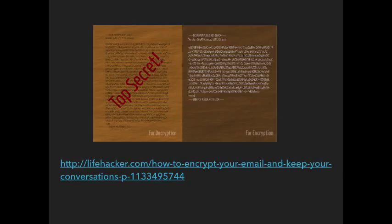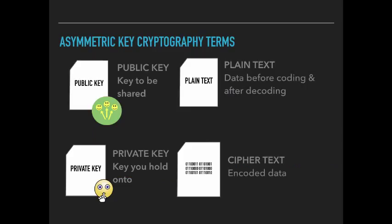If you'd like to make your own private key and public key, you can go to Lifehacker where it gives you detailed instructions as to exactly how to do it. Asymmetric key cryptography terms: your public key is the key that you want to be shared, but think of it like Facebook — only share it with who you need to. Your private key is what you hold onto as securely as you possibly can. Plain text is the data before encoding; ciphertext is the encoded data.